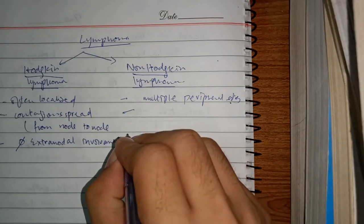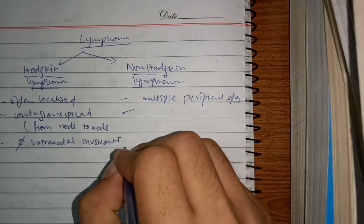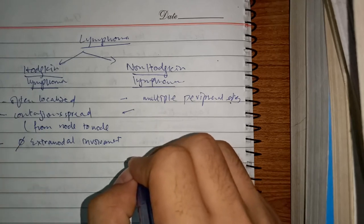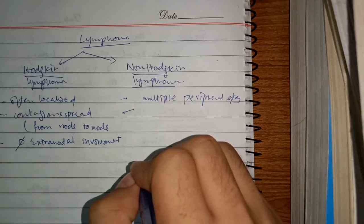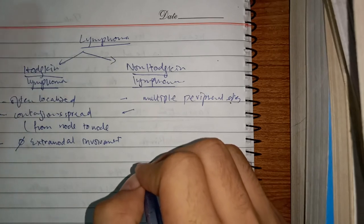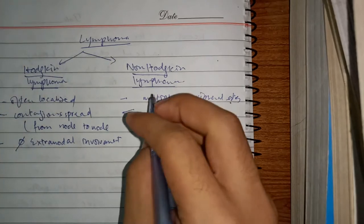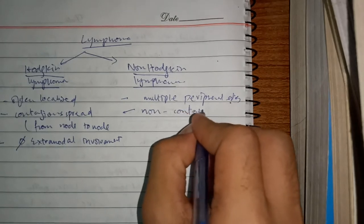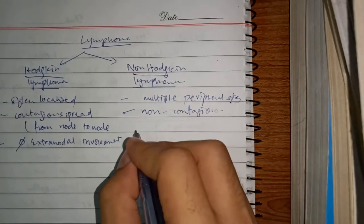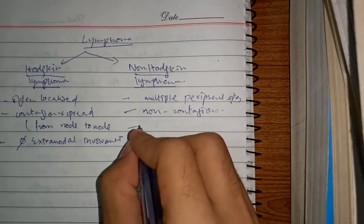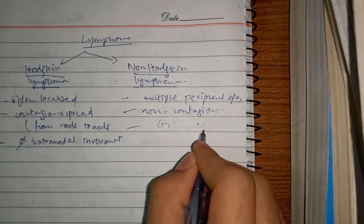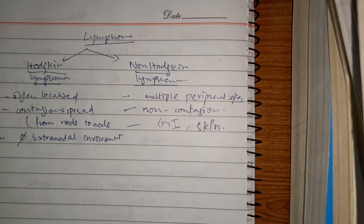In non-Hodgkin lymphoma, it often spreads to multiple peripheral sites in a non-contiguous manner — for example, cervical lymph node involvement and then inguinal lymph node involvement. There is also extra-nodal involvement, most commonly of the GI tract and skin.